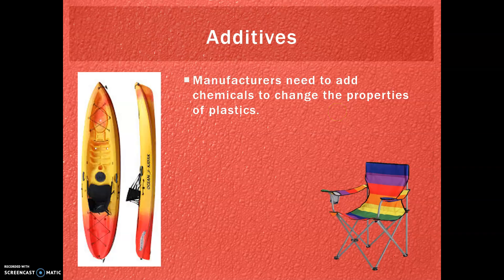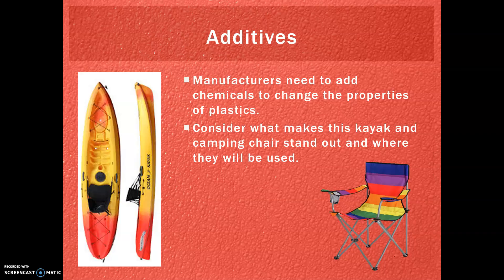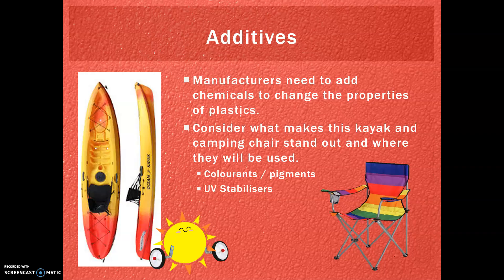To make plastics really useful, manufacturers often add special chemicals to change the properties. Looking at a kayak on the left and a camping chair on the right — both are very colourful, so colourants and pigments are added to make them aesthetically pleasing. Both are used outdoors, and a lot of plastics will get very brittle unless UV stabilisers are added to stop the plastics from degrading and becoming brittle in the sunshine. Also things like flame retardants — if the camping chair caught a spark from a bonfire or cigarette, it would go up in an instant unless flame retardants are added.